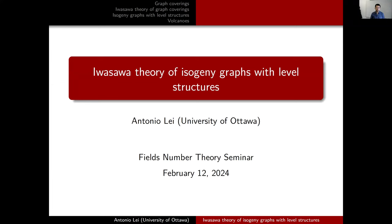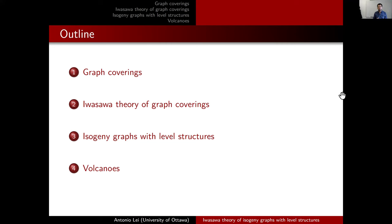Since this is a number theory seminar, I don't expect everyone to have a background in graph theory. Here's the plan of my talk: I will first review some of the basic notions in graph coverings, then tell you about some recent results on general Iwasawa theory for graph coverings, then how the isogenic graphs with level structures I define can be studied using Iwasawa theory of graph coverings. At the end, I will tell you something about a volcano — these are special graphs that look like a volcano, and they are related to the isogenic graphs.